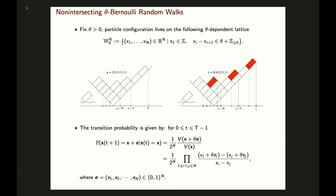For the theta version of those Berlouli random walks, instead of living on the integer lattice, they live on a theta-dependent lattice: x₁ to xₙ where x₁ is an integer, but the gaps between adjacent xᵢ and xᵢ₋₁ are given by theta plus some integer. This comes from rescaling the Young diagrams such that each box is a rectangle with one side 1 and another side theta. If you project to the horizontal axis, the first row corresponds to μ₁, the second to μ₂ − θ, the third to μ₃ − 2θ, so they live on this theta-dependent lattice.